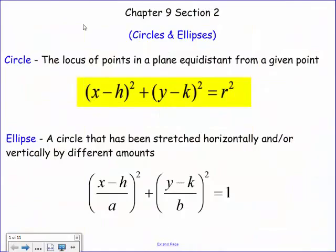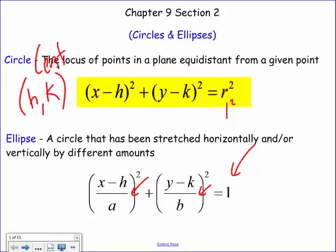We have our equations for circles and ellipses. For the unit circle it's one squared which is one, so that's why the unit ellipse has one instead of r-squared. The only difference between a circle and an ellipse is that the ellipse has a horizontal stretch and a vertical stretch. And remember that h and k stand for the point of the center.